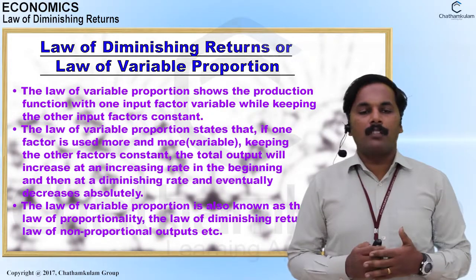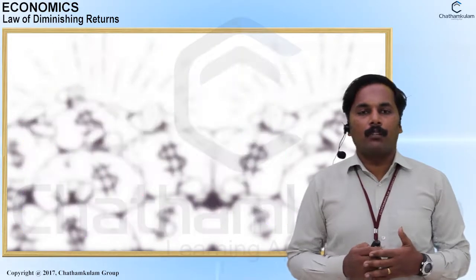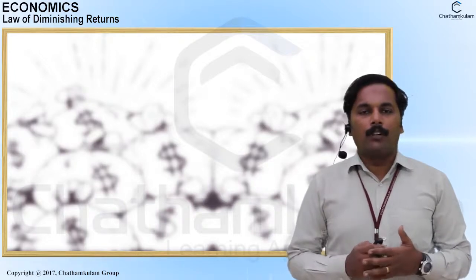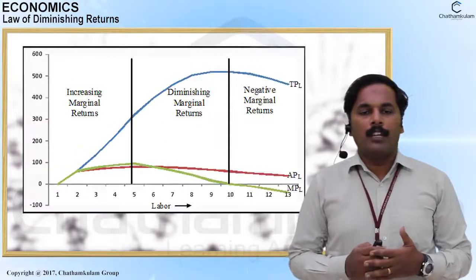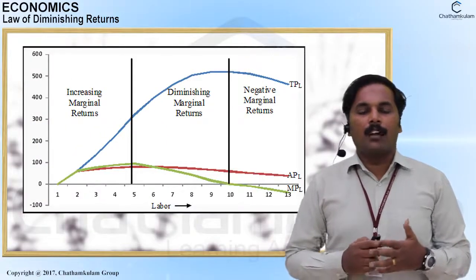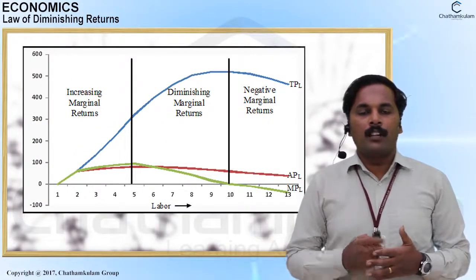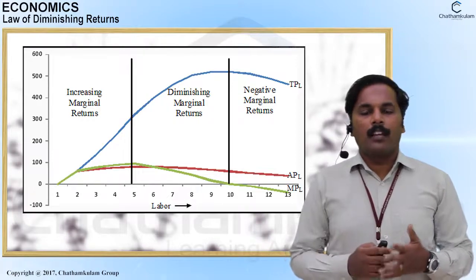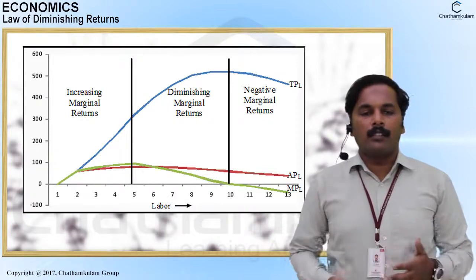There are three stages with respect to the law of one variable input: first, increasing marginal returns; second, diminishing marginal returns; and third, negative marginal returns.